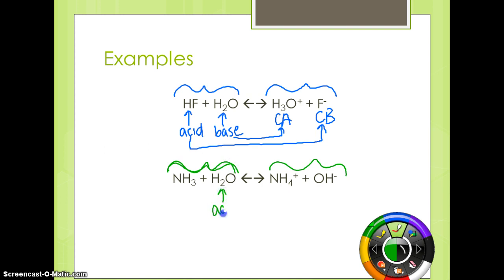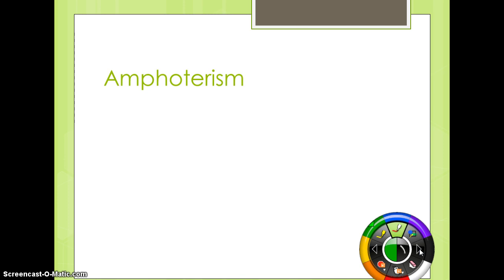Once you've identified the acid, everything else kind of falls into place. If this is the acid, then the NH3 has to be the base. And the acid is going to become the conjugate base.